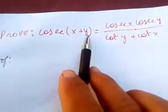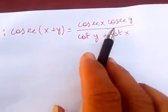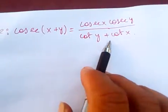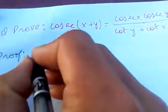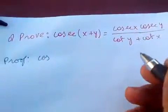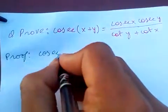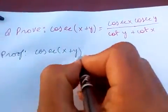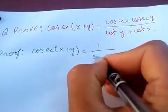Hi friends, today I'm going to prove cosec of x plus y is equal to cosec x cosec y over cot y plus cot x. So we know that cosec of x plus y is the same as one over sine x plus y.